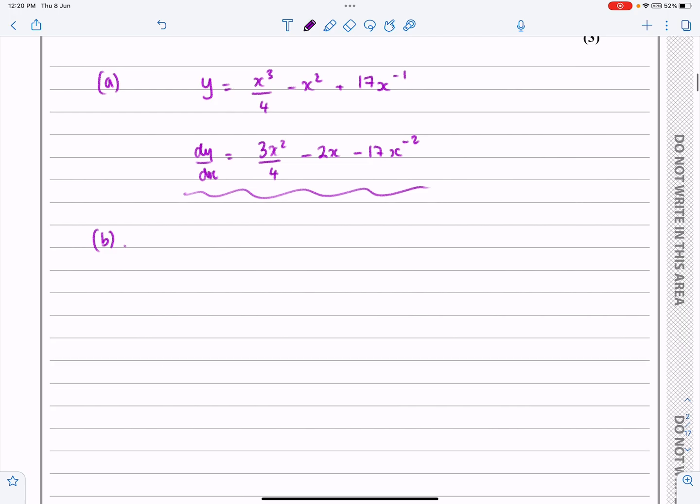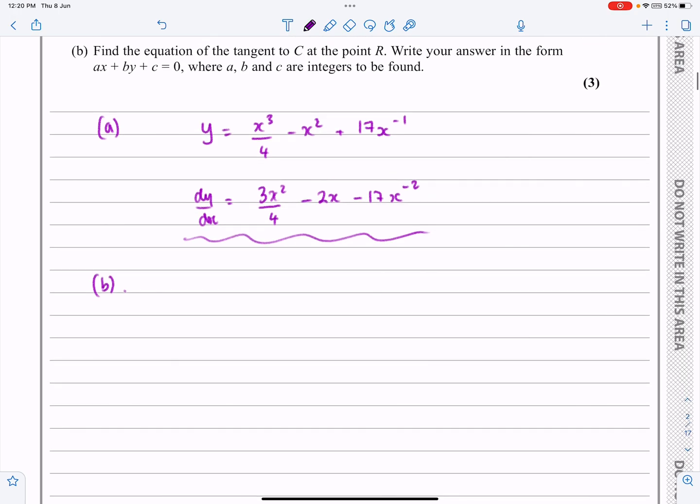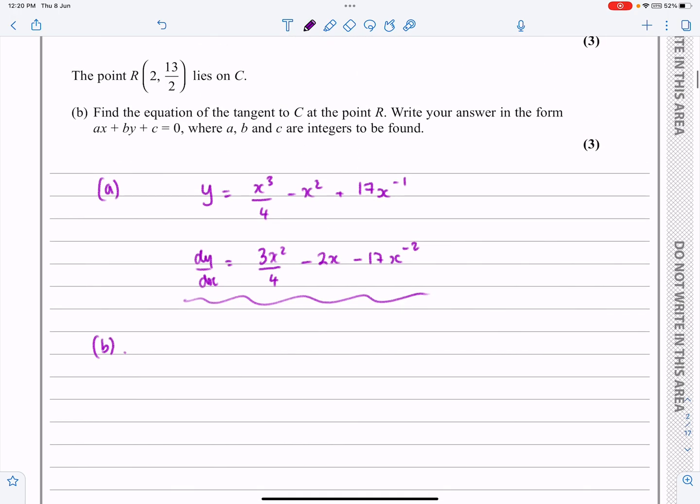Yeah, well this is really straightforward. Okay, so if they've given me the point (2, 13/2), then as far as I'm concerned, I want m, x₁ and y₁ for my equation of a tangent. And they've already given me 2 and 13/2.